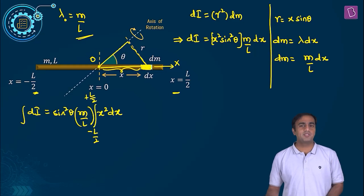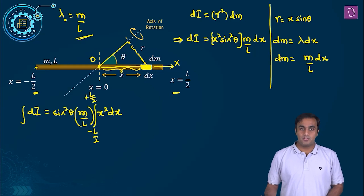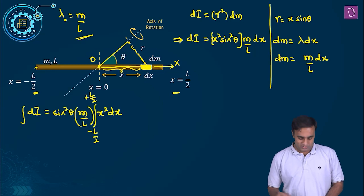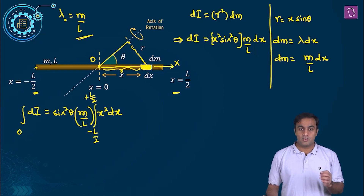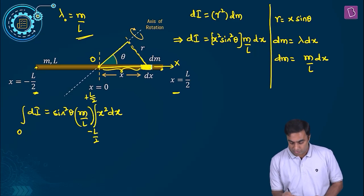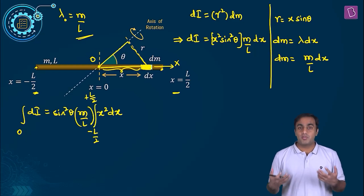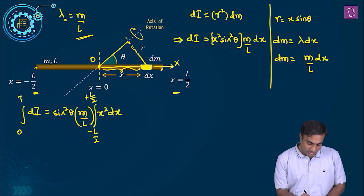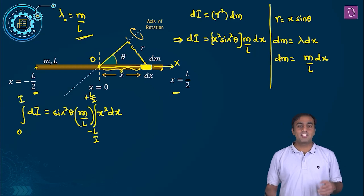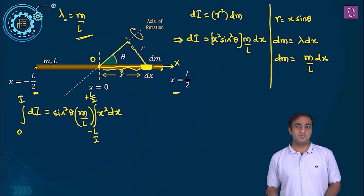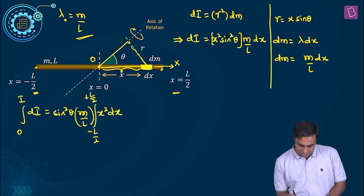What is on the left hand side? When we start from this end at minus L by 2, what is the value of moment of inertia we have accumulated? Nothing — zero. But when we end up constructing this thin uniform rod and move to the other end, x equal to plus L by 2, we have accumulated the net moment of inertia to be I. That is the interpretation of the limits. Now let us simplify.